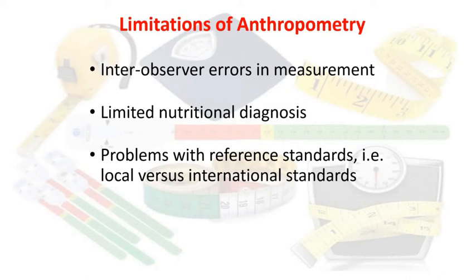Another limitation is that anthropometric methods allow only limited nutritional diagnosis: we can see that a person is over-nourished or malnourished, but we cannot identify what type of nourishment issue it is, nor specify which nutrient is deficient — whether it is a specific vitamin or mineral deficiency. There are also problems with reference standards, as local versus international standards vary by geographical area, meaning results cannot be generalized across different populations.